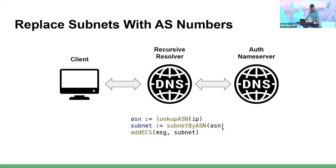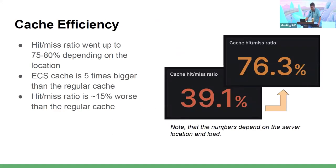We've got it all up and running. So how good is it? There are two things we need to assess: caching efficiency and actual accuracy of the responses. Let's focus on efficiency first. The cache hit ratio went up to 75–80% depending on the location. Note that the ECS cache in our case is five times bigger than the regular cache, so if the sizes were the same the numbers might have been worse. Comparing these two caches, the hit ratio is 50% worse than the regular DNS cache — not bad, but can we do better?